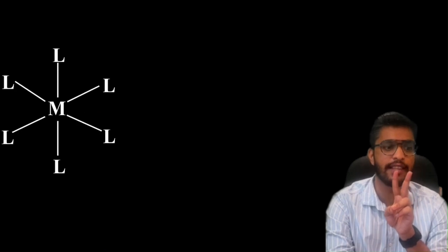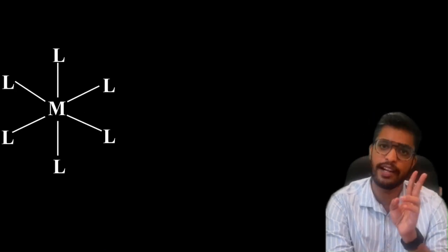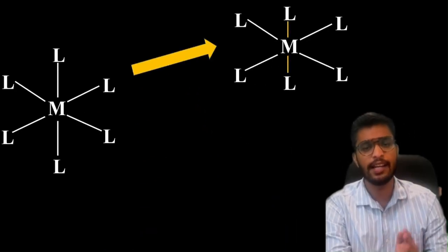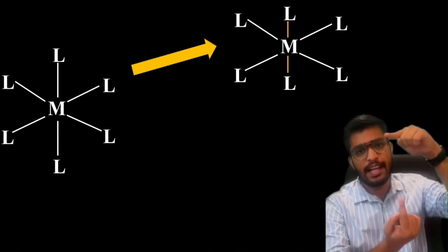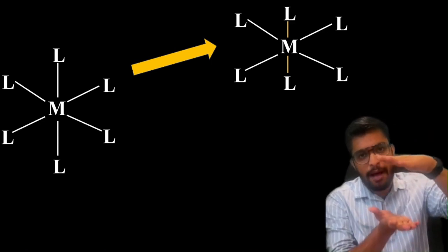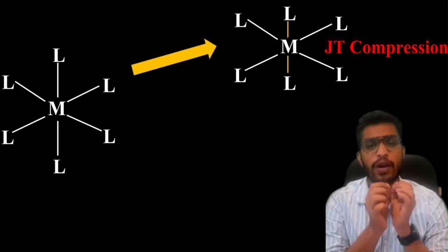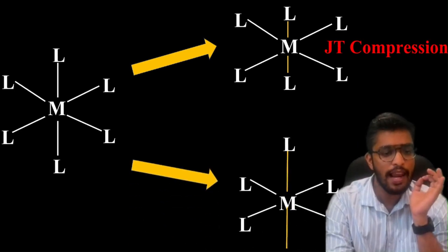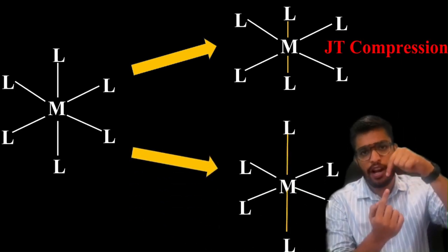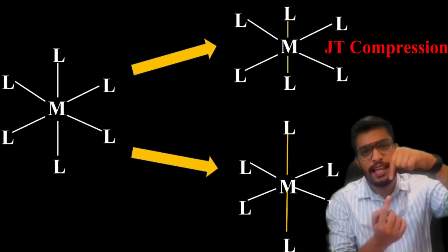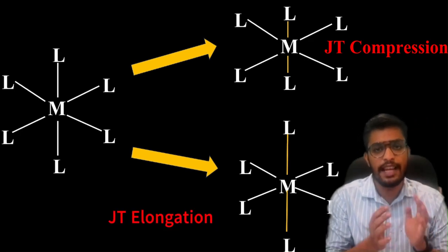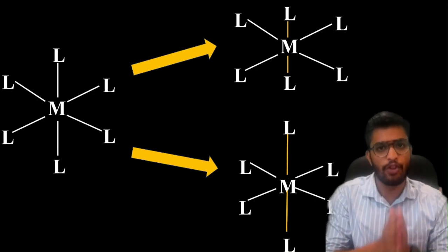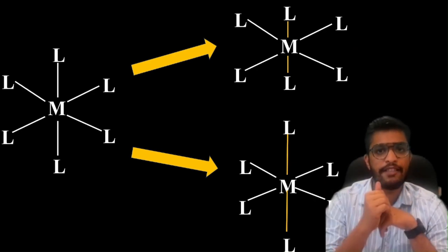Jahn-Teller has two types of distortion on this normal octahedral geometry. Either the perpendicular metal-ligand bond compresses, and this is the Jahn-Teller compression.